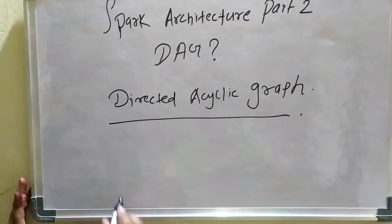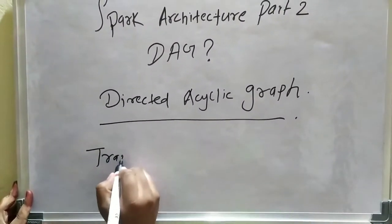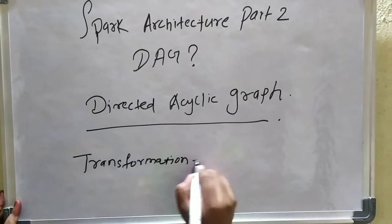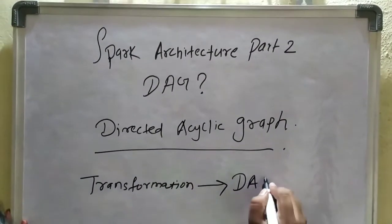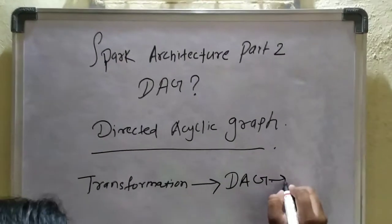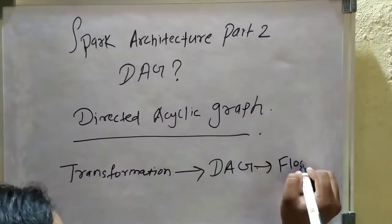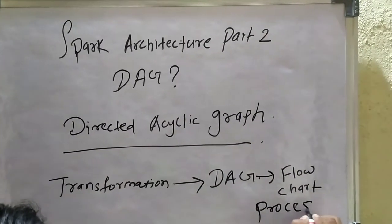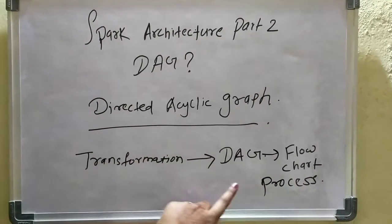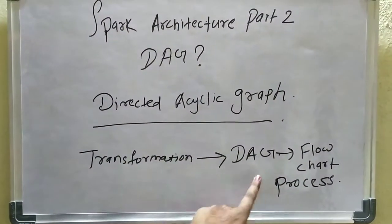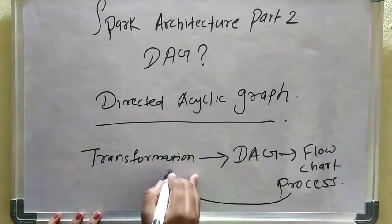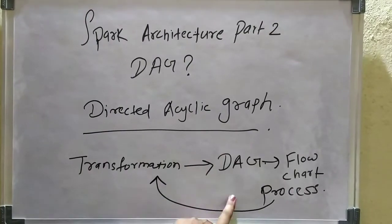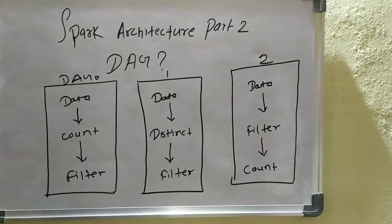Whenever we write code in Spark, it contains four things: the RDD, transformations, actions, and DAG. After the transformations, DAG comes into picture. DAG is like a flowchart-like structure where a process is denoted in the form of a flowchart. The Directed Acyclic Graph creates a graph based on the transformations, which are the commands — explained in detail in the previous video.